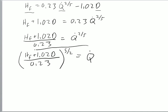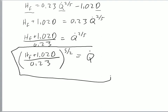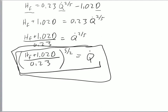So this is the equation we can use to calculate a given heat release rate given a flame height and pool diameter. I hope you found this useful and have a good day.